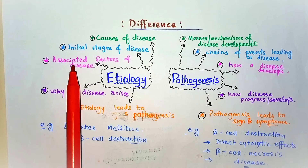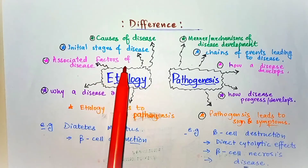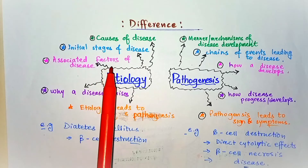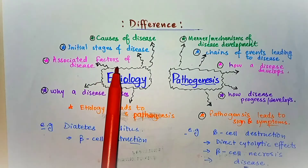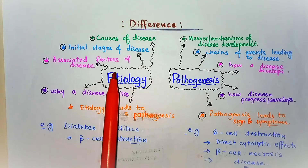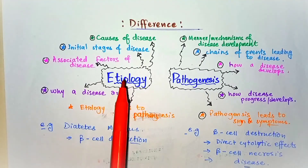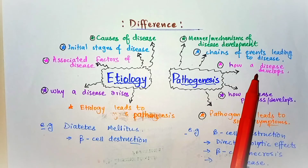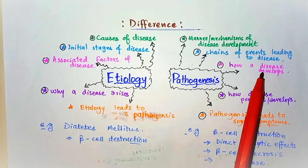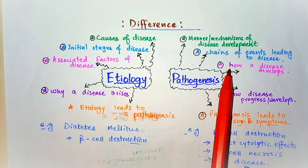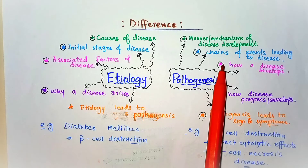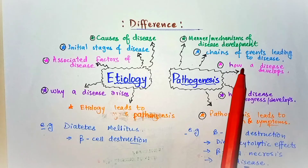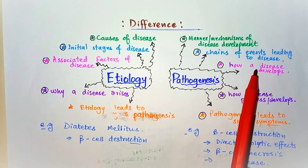The second point: in etiology we study the initial stages of a disease — how the disease develops and what are the causative agents that progress to structural or functional abnormality in the body's organs, tissues, or cells. In pathogenesis, we discuss the chain of events that lead to the abnormality of the organ or tissue, and how the disease progresses to produce signs and symptoms.